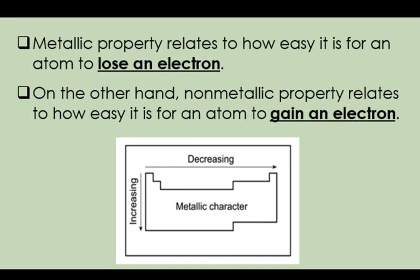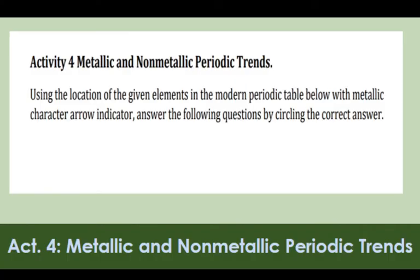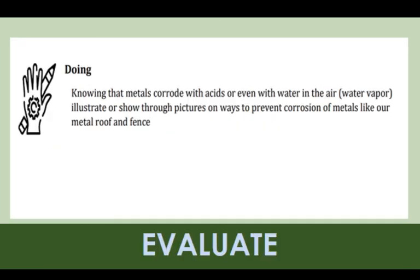With respect to position in the Periodic Table, metallic character increases from top to bottom and decreases from left to right, while non-metallic character decreases from top to bottom and increases from left to right. Metallic property relates to how easy it is for an atom to lose an electron, while non-metallic property relates to how easy it is for an atom to gain an electron. You can now answer Activity Number 4 entitled Metallic and Non-Metallic Periodic Trends. For evaluation, knowing that metals corrode with acids or even with water in the air, you have to illustrate through pictures ways to prevent corrosion of metals like metal roofs and fences.